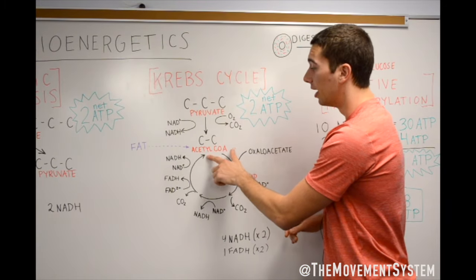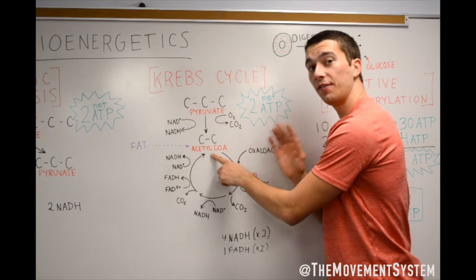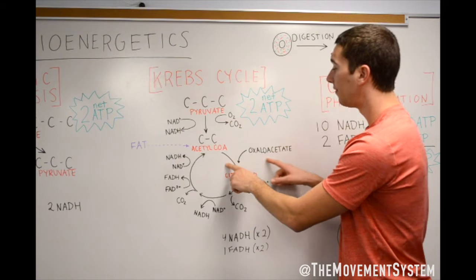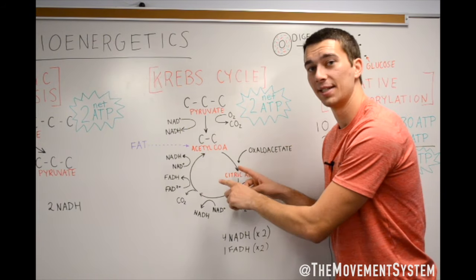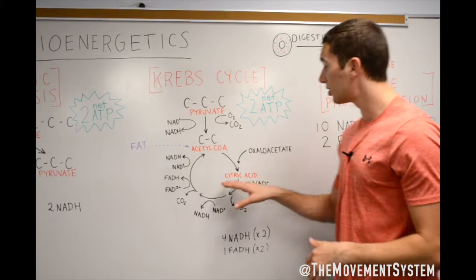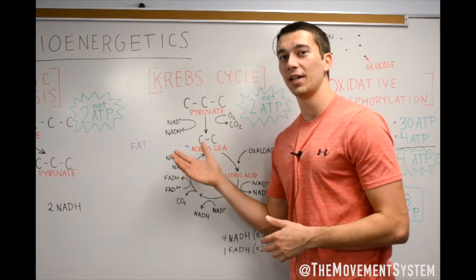All right, so acetyl-CoA is that two-carbon molecule. From the very first step, we're going to combine a two-carbon acetyl-CoA with a four-carbon oxaloacetate. The two things combined is going to make citric acid. And some people think this is so important they name the Krebs cycle after it and call it the citric acid cycle.